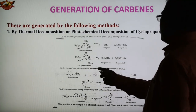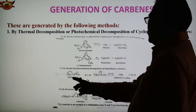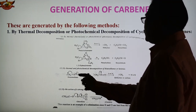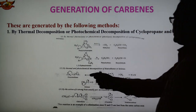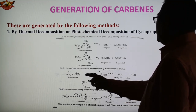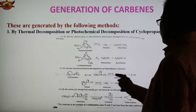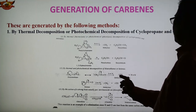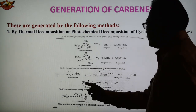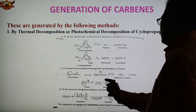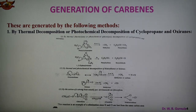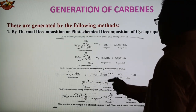The second method is thermal or photochemical decomposition of diazomethane or ketene. In the case of diazomethane, the N=N bond breaks, electrons shift, forming a triple bond intermediate, and then further decomposition gives CH2 with 2 electrons — methylene carbene — along with N2. In the case of ketene, CH2=C=O, the bond breaks and we obtain methylene carbene and CO. So by photochemical decomposition of diazomethane and ketene, we obtain the methylene carbene CH2.